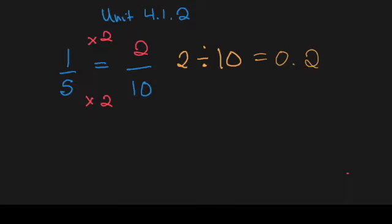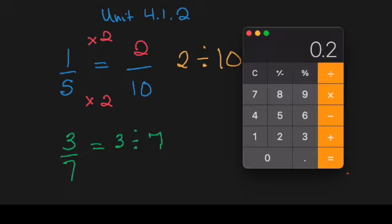We'll take a look at another example, which is 3 over 7, which cannot be rewritten with a denominator of either 10 or 100 or 1,000. But we can rewrite this as 3 divided by 7. Just to see, we'll pop our calculator back in. And we will divide 3 divided by 7. And we get a big mess of numbers. So that's 0.4285714285.